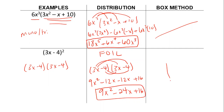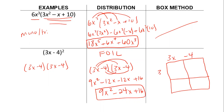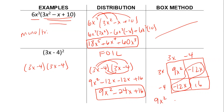There's also the box method that can be utilized here. Since I have 2 binomials, I'm going to do a 2 by 2 box. So we have 9x squared, 3x times negative 4 is negative 12x, 3x times negative 4 is negative 12x, and negative 4 times negative 4 is positive 16. Then you combine your like terms, and we have 9x squared minus 24x plus 16.